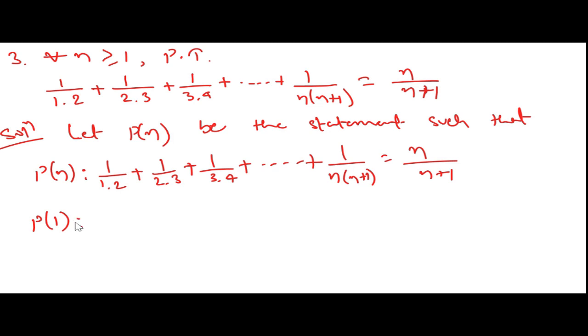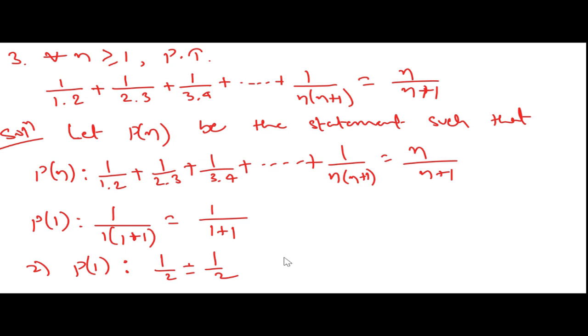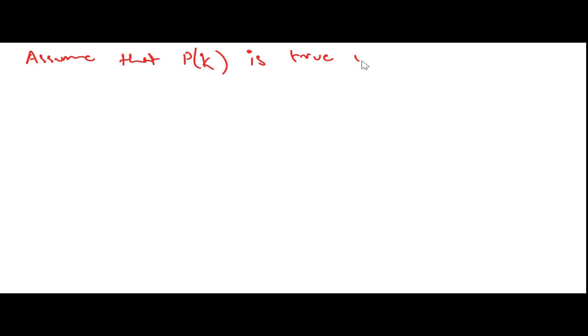For n = 1: P(1) gives 1/(1·2) = 1/(1+1), so 1/2 = 1/2, which is true. LHS equals RHS. Now we need to assume P(k) is true, where k is some positive natural number.